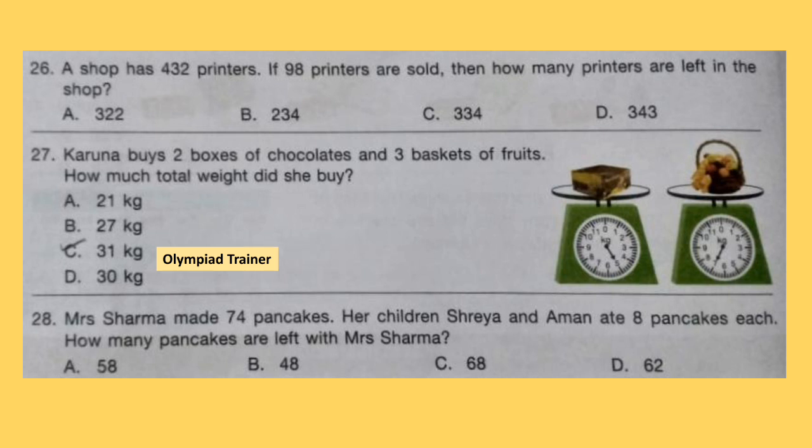Question 26. A shop has 432 printers. If 98 printers are sold, then how many printers are left in the shop? Since 98 printers are sold, you have to subtract 98 from 432. The correct answer is option C: 334.